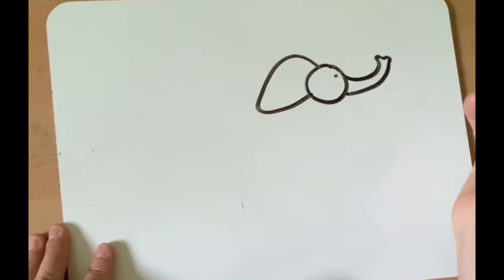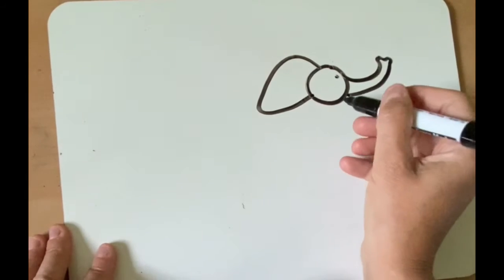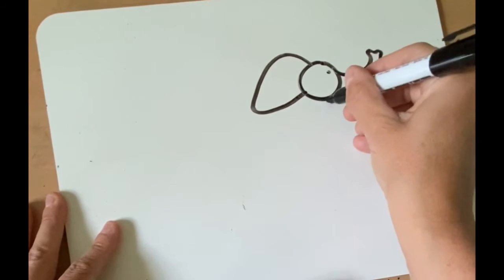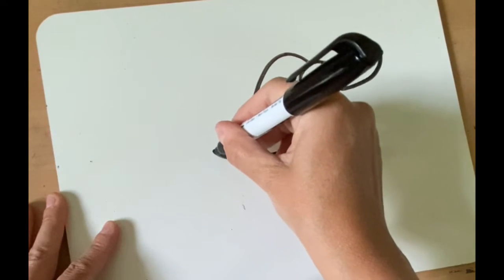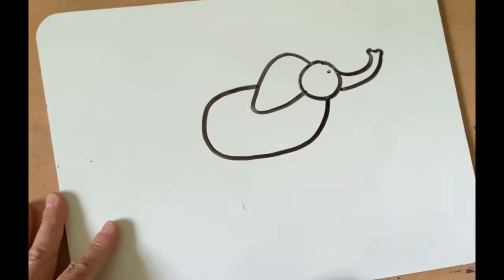Make a dot for its eye. Then we're going to make a curve line going around up to the ear.